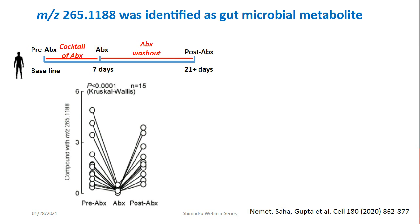Here you are looking at one example of identification — a comparison of high-resolution mass spec data where we are comparing the compound in plasma, shown in red, versus the standard shown in blue. When we finalized our untargeted metabolomics, we decided to validate these findings and developed a triple-quad mass spectrometry method — so low resolution — and used that on a cohort composed of 4,000 individuals undergoing elective diagnostic cardiac evaluation with longitudinal follow-up.